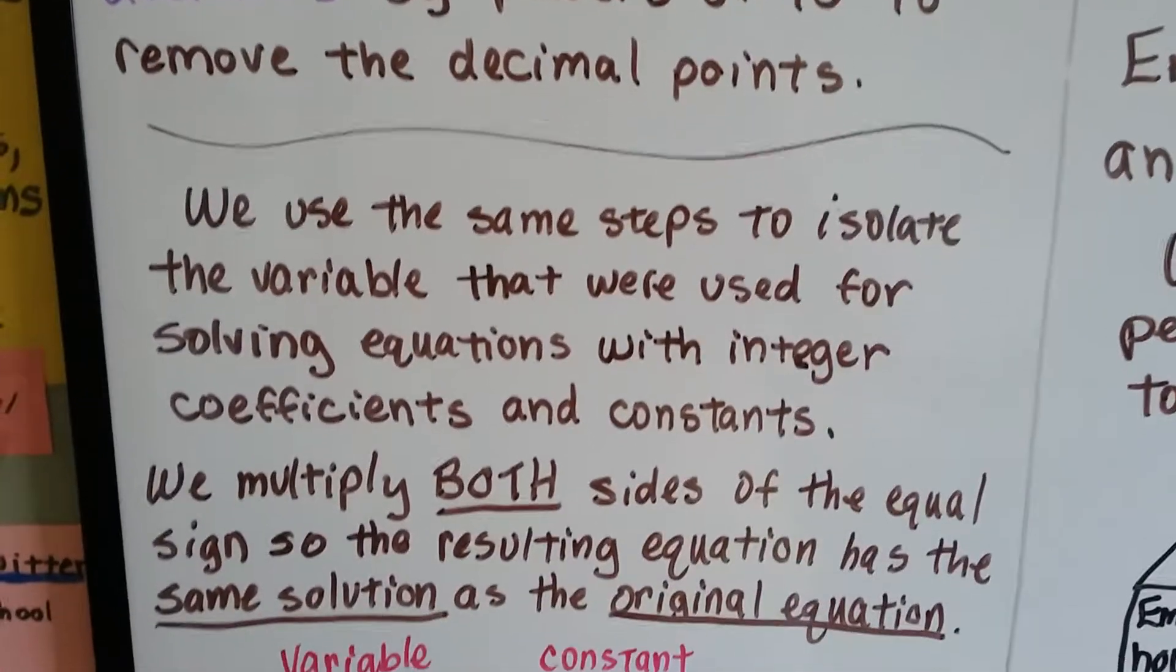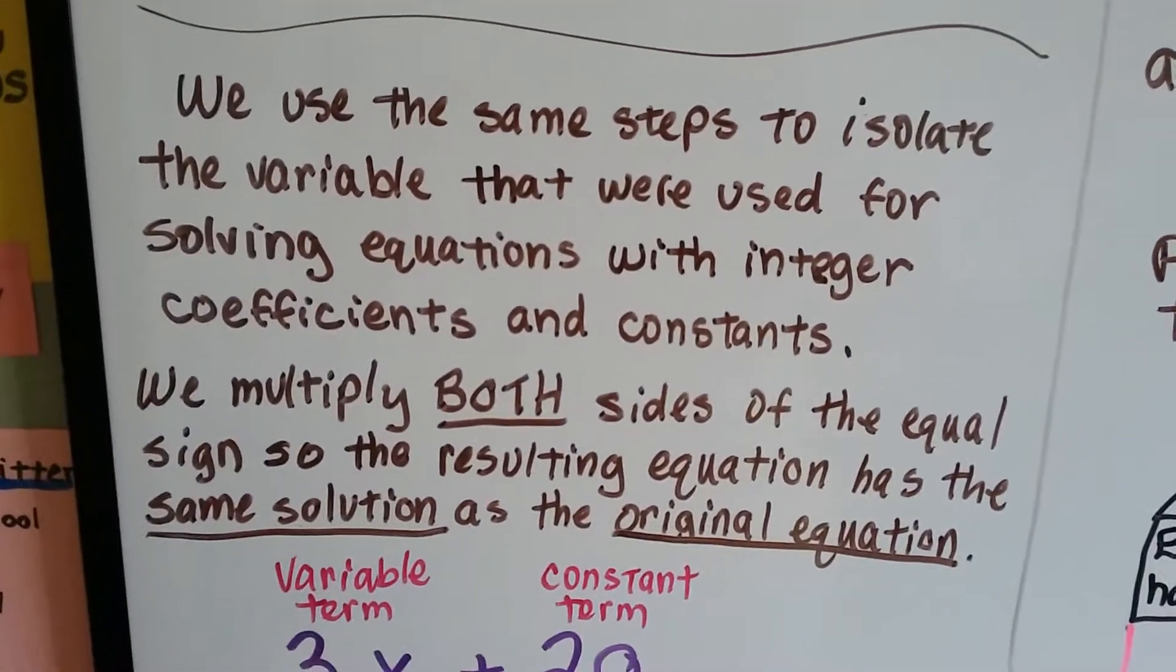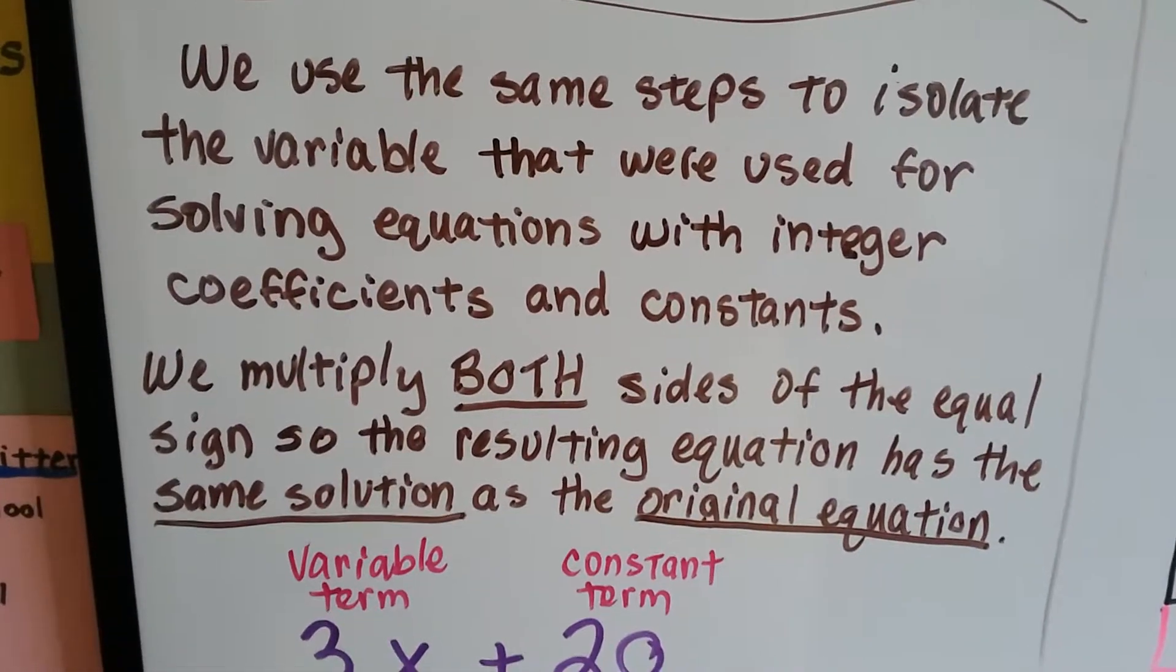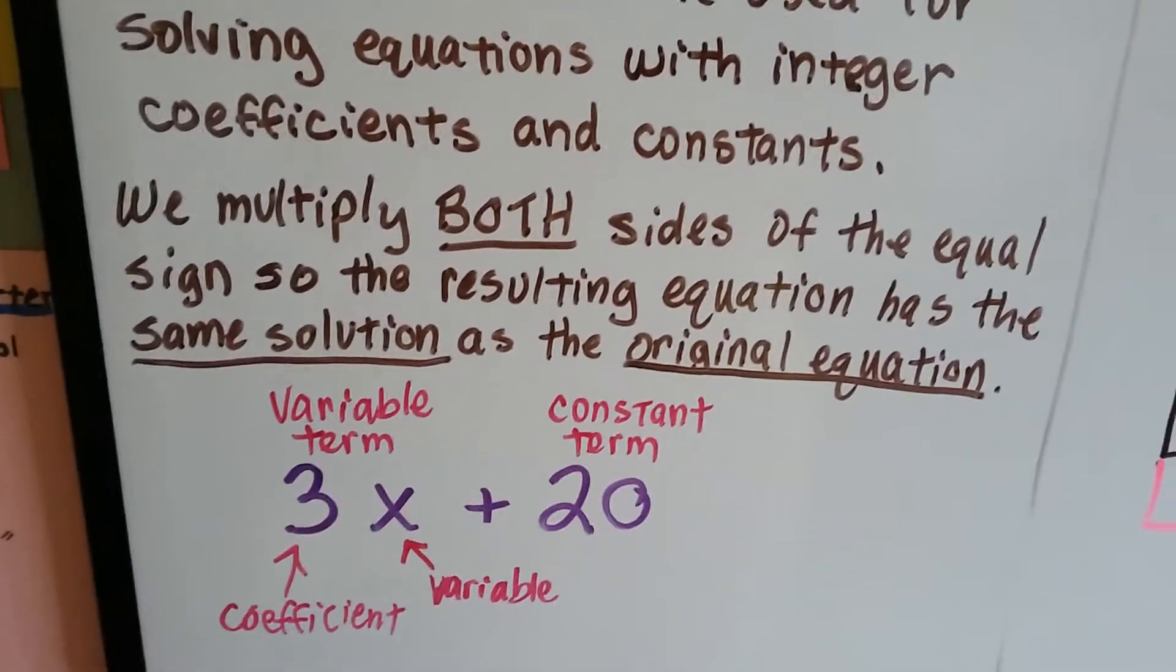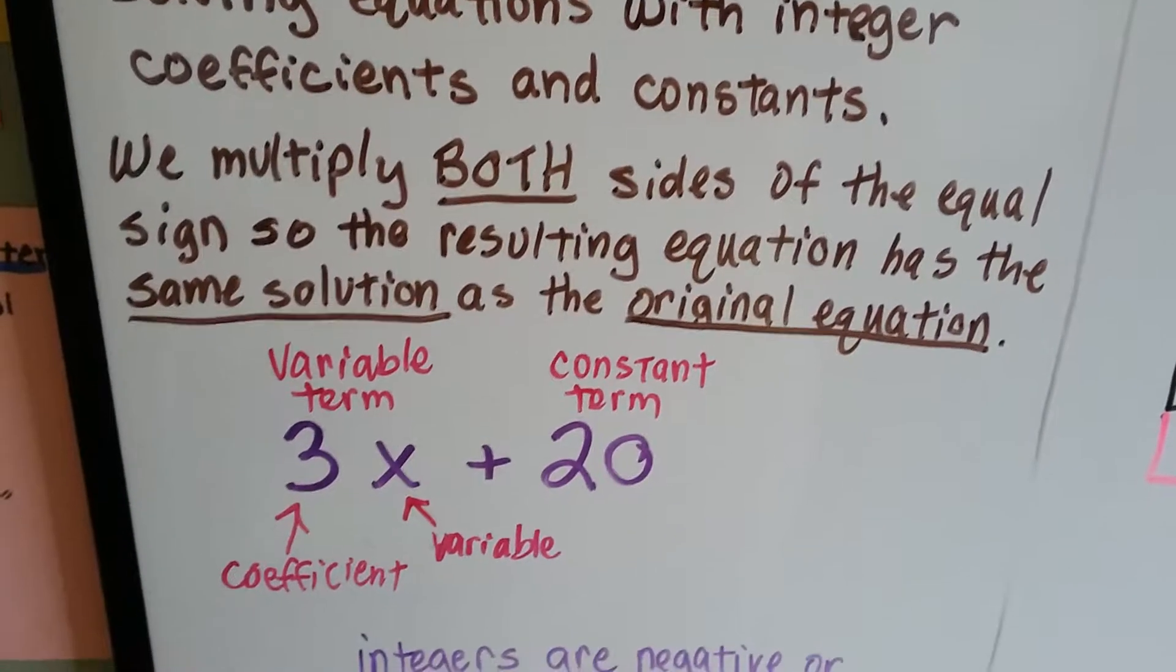We use the same steps to isolate the variable that were used for solving equations with integer coefficients and constants. We multiply both sides of the equal sign so the resulting equation has the same solution as the original equation.